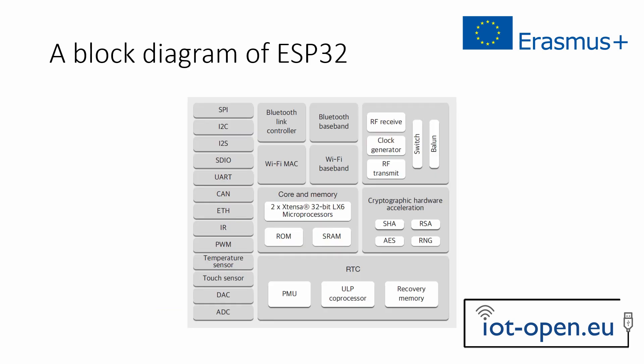This figure shows a block diagram of ESP32. This highly integrated chip includes an antenna interface with switch, balun, and power management converter, Wi-Fi and Bluetooth interface, main 2-core processor, a third ultra-low power core, static RAM as data memory, flash memory for storing programs, real-time clock, and cryptographic hardware and interfaces.